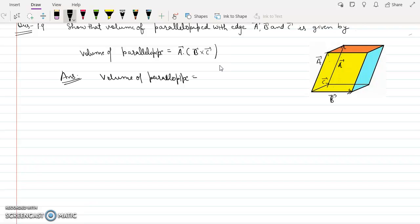Suppose this is a parallelepiped and this one edge is represented by vector A, the second edge is represented by vector C, and the third edge is represented by vector B.